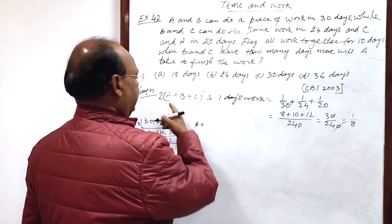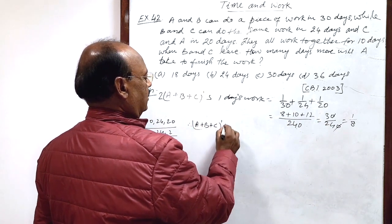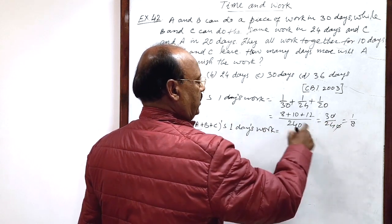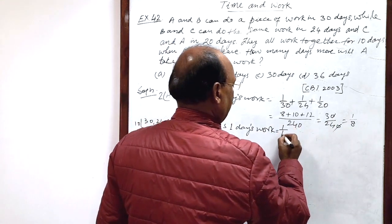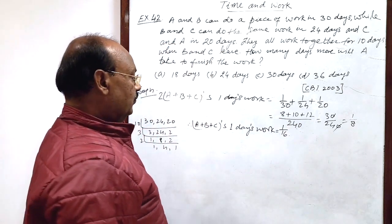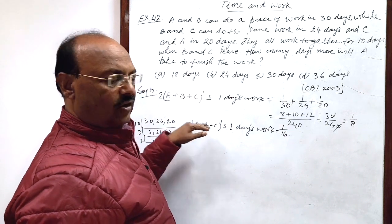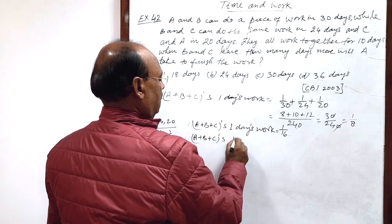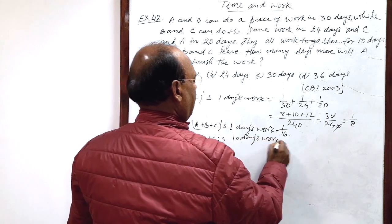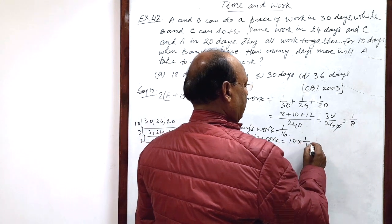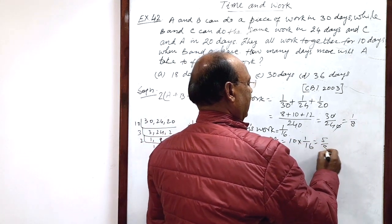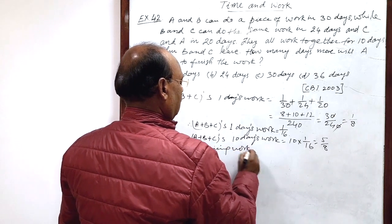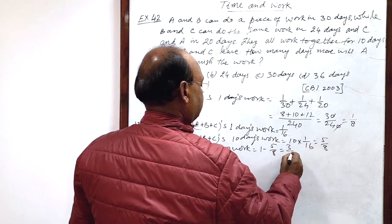Therefore, dividing by 2, we will get A plus B plus C's 1 day's work is equal to 1 by 8 divided by 2, that is 1 by 16. And A, B and C all are working for 10 days. Therefore, A plus B plus C's 10 days work is equal to 10 times 1 by 16, this is equal to 5 by 8. And therefore, remaining work is 1 minus 5 by 8, this is equal to 3 by 8.